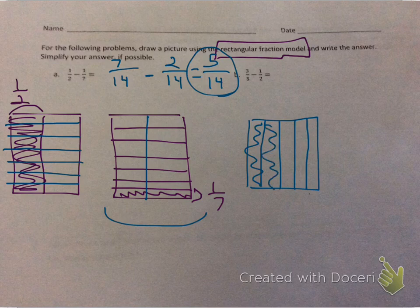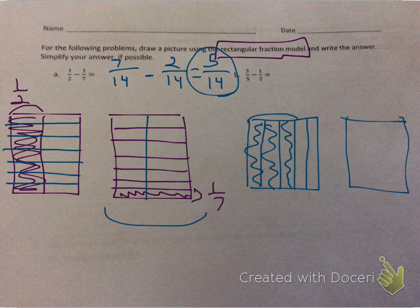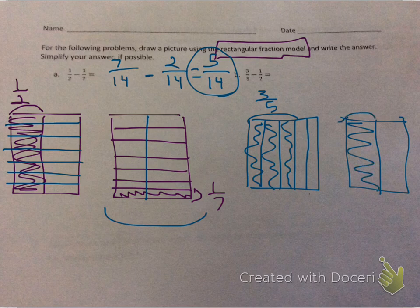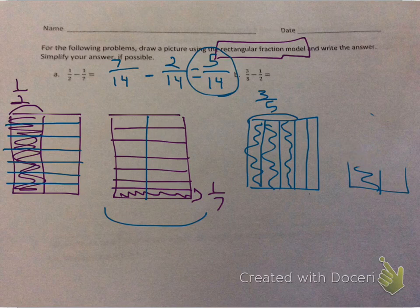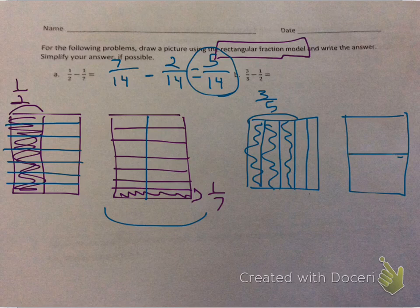Now I'm going to draw a model for 1/2. I'm going to cut it in half and shade 1, and then give it a label. Actually, I'm going to redo that because I want to draw my lines in a different direction. So I'm going to cut it in half this way and shade it like that.